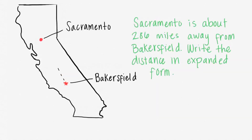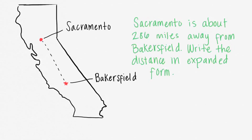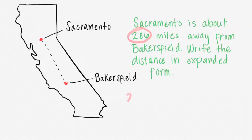Sacramento is about 286 miles away from Bakersfield. Write the distance in expanded form. By looking at this problem we see that the distance is 286 miles. Let's write 286.